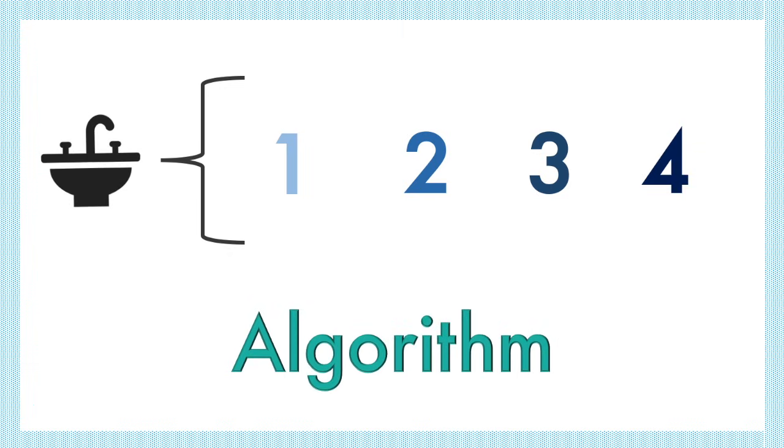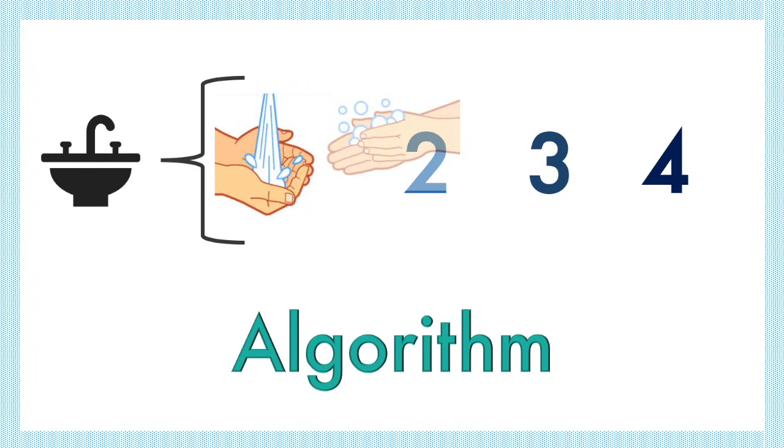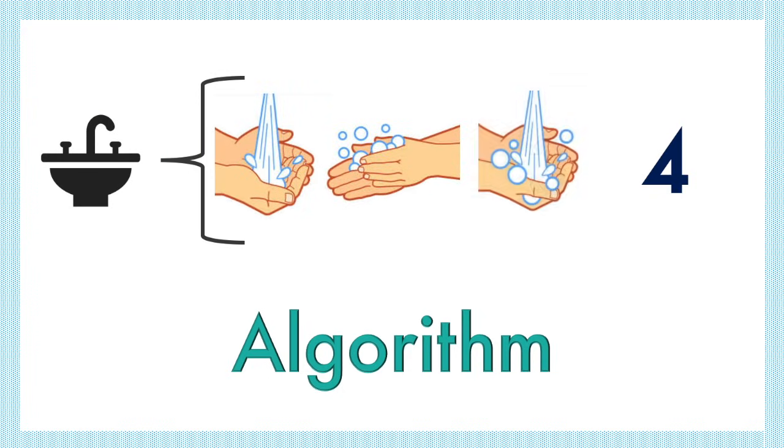You follow an algorithm every time you wash your hands. First, you get your hands wet. Then you get soap, you wash off the soap, and then you dry.